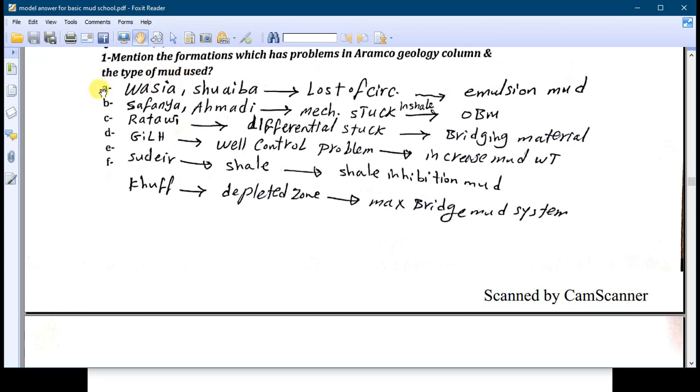Number one: mention the formations which have some problems in Aramco geology column and what are the types of mud used. Question A: Wasia and Shuaiba formation. You may take lost circulation. The problem is lost circulation. We use emulsion mud or now we are using high viscous mud or high bentonite mud.